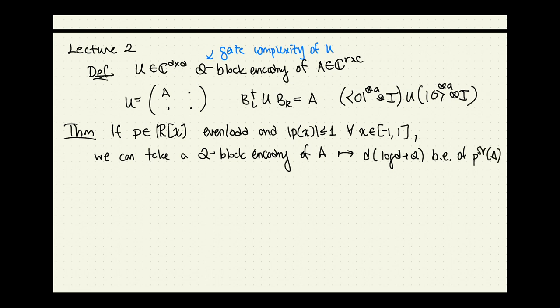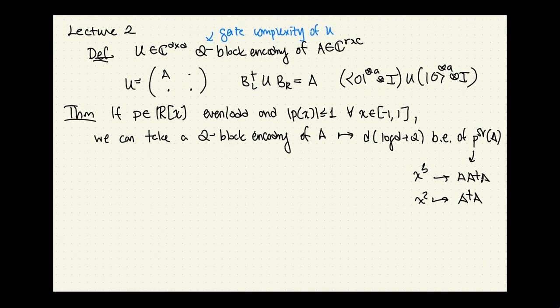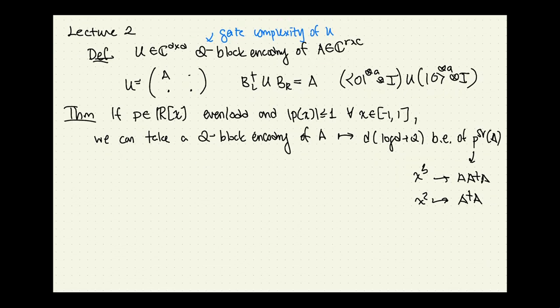Recall that this polynomial notation means: if you have x cubed, it gets converted to A A-dagger A; if it has x squared, it gets converted to A-dagger A. What I'm going to do in this lecture is try to prove this theorem.